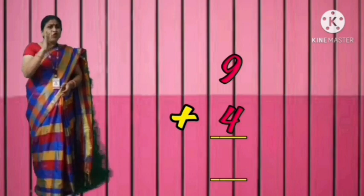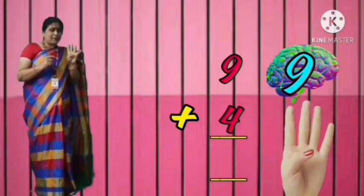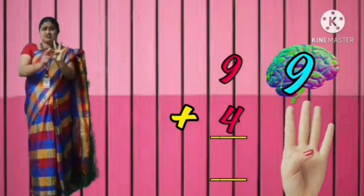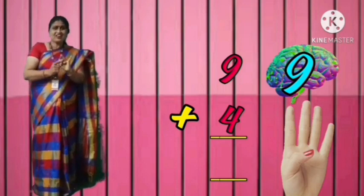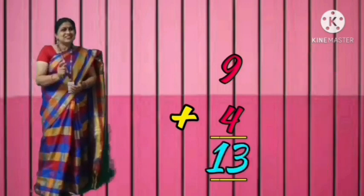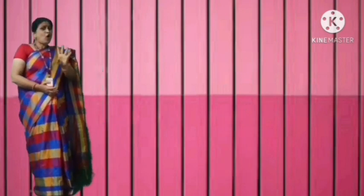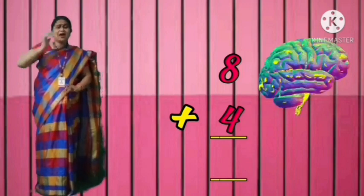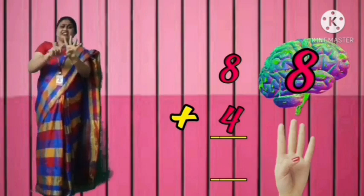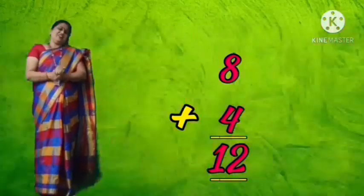9 plus 4. 9 in the mind, 4 in the finger. After 9: 10, 11, 12, 13. 9 plus 4 is equal to 13. 8 plus 4? 8 in the mind, 4 in the fingers. After 8: 9, 10, 11, 12. Very good.